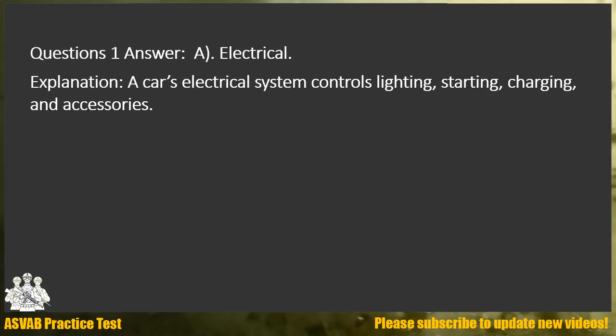Question 1. Answer A. Electrical. Explanation: A car's electrical system controls lighting, starting, charging, and accessories.